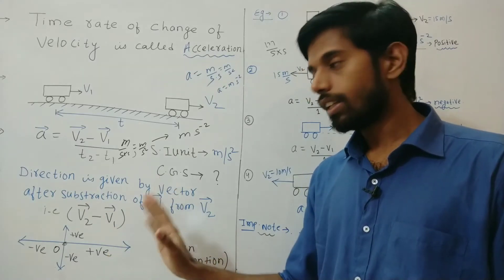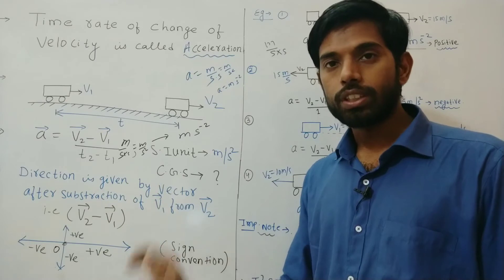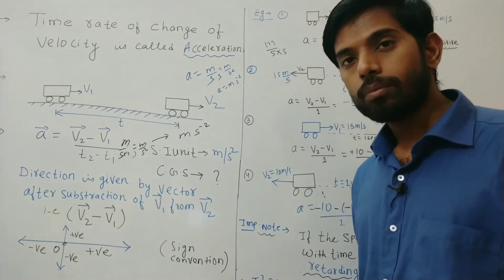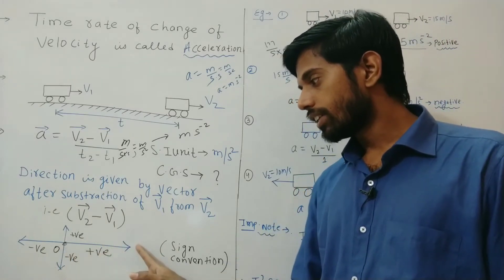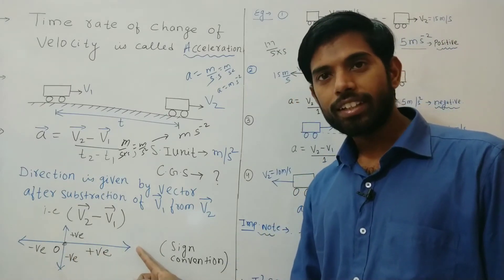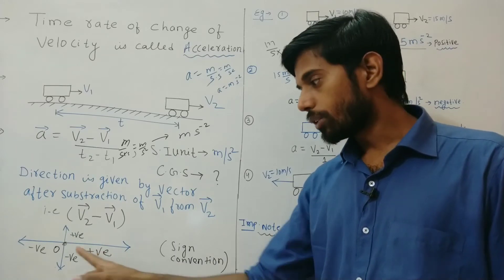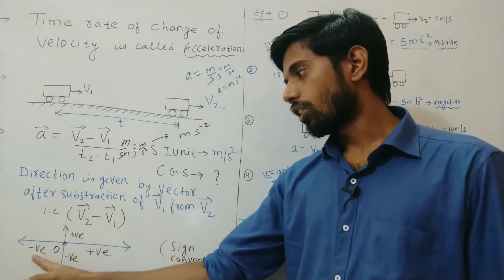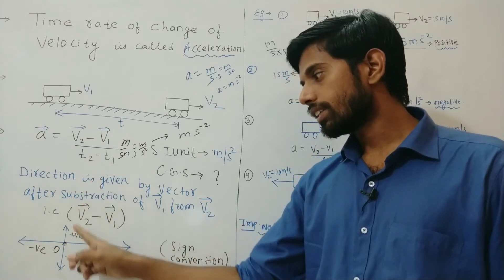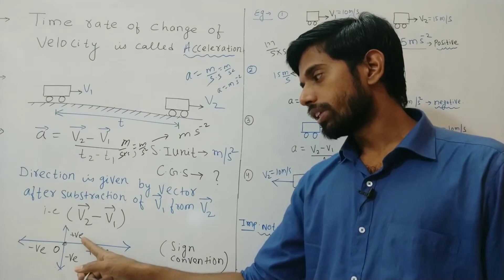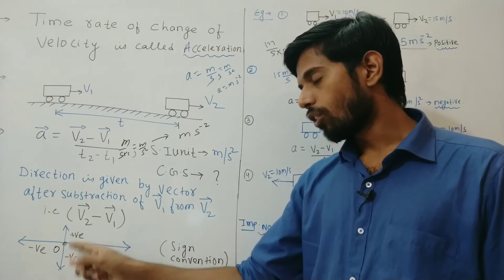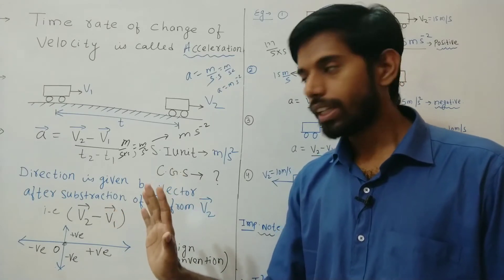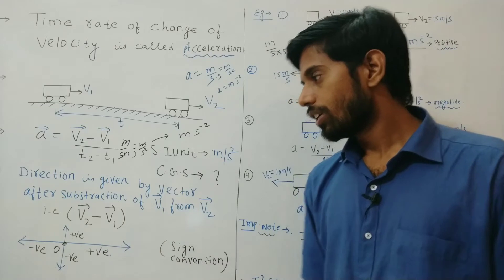Here is the sign convention: when an object is moving toward the right, we take velocity as positive. If it moves toward the left, we take velocity as negative. If it moves upward, we take velocity as positive, and if it moves downward, we take velocity as negative. This is measured from the origin O.